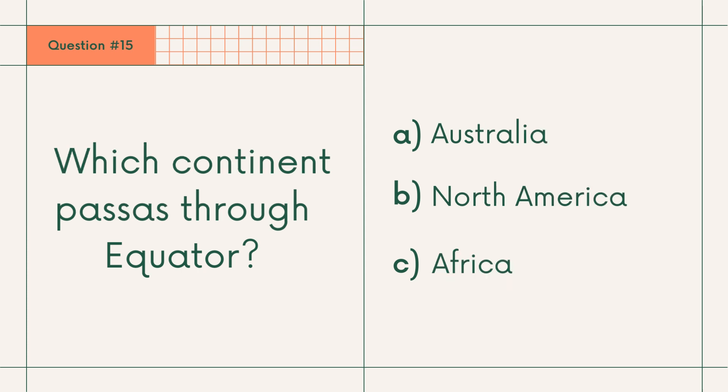Question 15: Which continent passes through the equator? A. Australia, B. North America, or C. Africa. Answer: C. Africa.